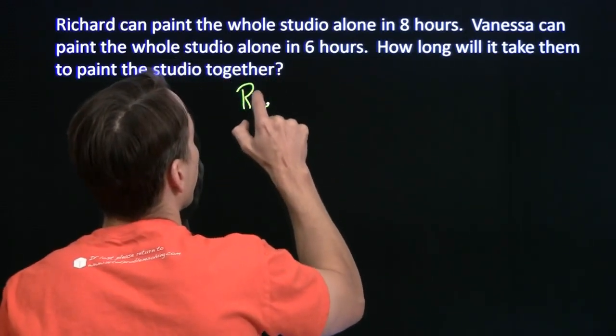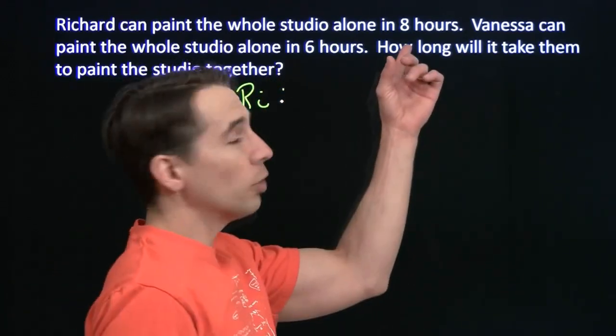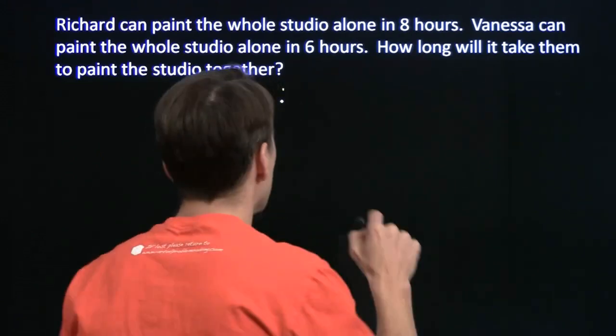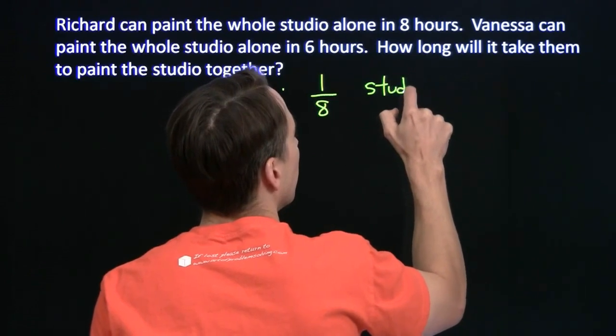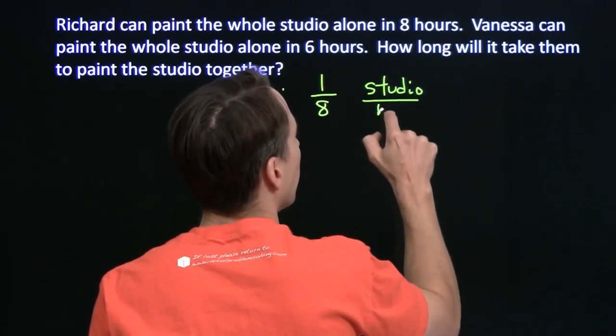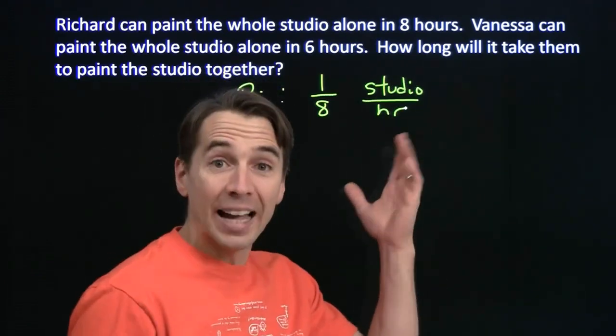So, for me, I can do the whole studio in eight hours. So that means in each hour, I can do one-eighth of the studio. So I can do one-eighth of the studio per hour. That's a rate.